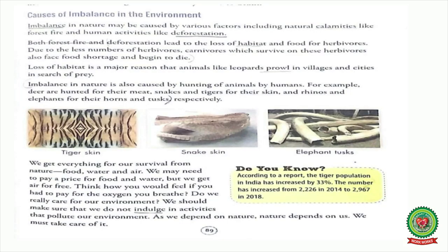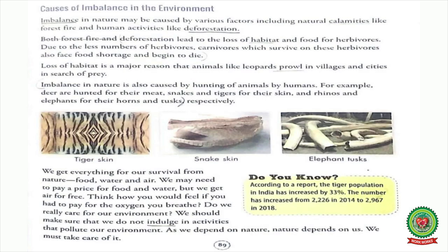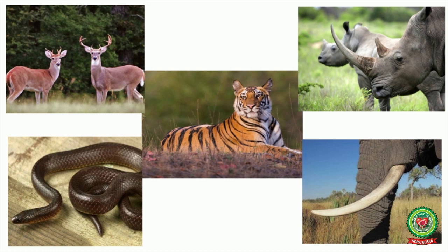Underline the word 'prowl' and write its meaning: to move around quietly in a place, trying not to be seen or heard. One more reason for imbalance in nature is excessive hunting of animals by humans, like deer are hunted for their meat, and snakes and tigers are hunted for their skin.